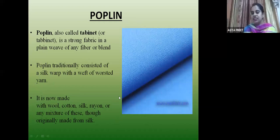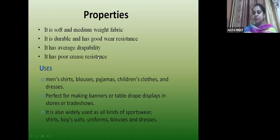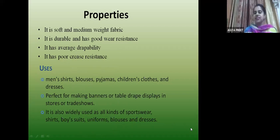Poplin is a strong fabric in plain weave. It can be made from any fiber or blend. It traditionally consisted of silk warp with worsted yarn weft and now is made in wool, cotton, silk or any mixture. Properties: soft and medium weight, durable and good wear resistant, average drapability, but poor crease resistance. Mostly used in men's shirts, blouses, pyjamas, children's clothes, dresses, banners and table tops, and widely used in sportswear — shirts, suits, uniforms, blouses.